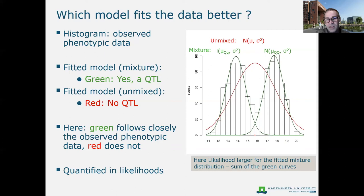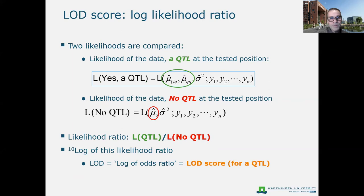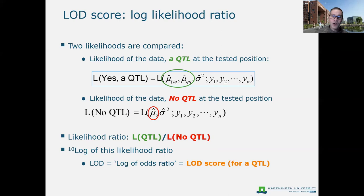We compare these two likelihoods with each other. In this case the green mixture distribution follows the histogram much more closely than the red single-distribution curve. We have the likelihood of a QTL — fitting two means, one per distribution — versus the likelihood of no QTL with only a single mean. We calculate the likelihood ratio, take the log base 10 of it, and that gives us the LOD score for the presence of a QTL at the test position.